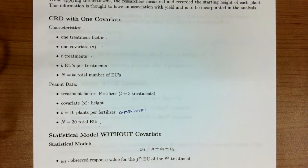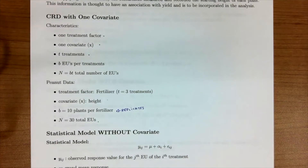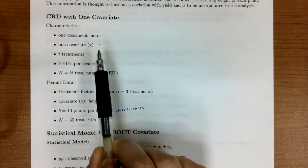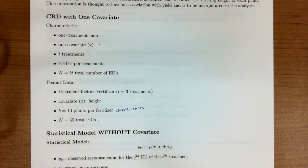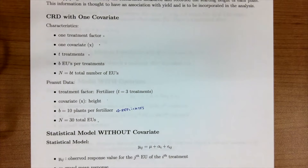An ANCOVA merges the idea of an ANOVA analysis — our treatment factors — with the regression analysis of having a continuous factor. Technically, we can parameterize an ANOVA as a regression and vice versa, and we'll talk more about that in the last lesson.